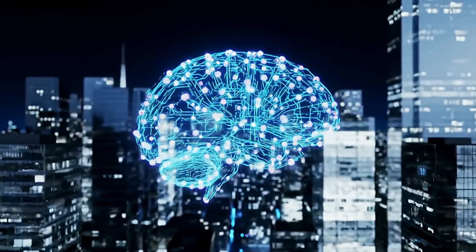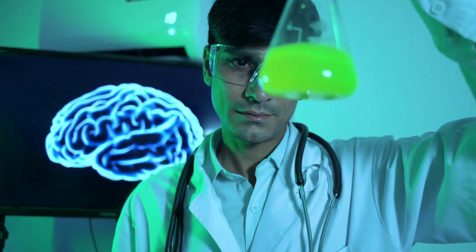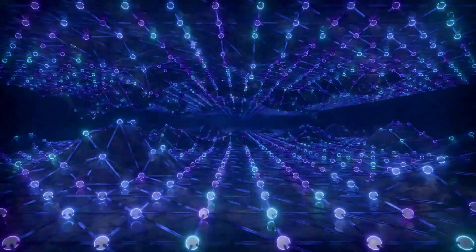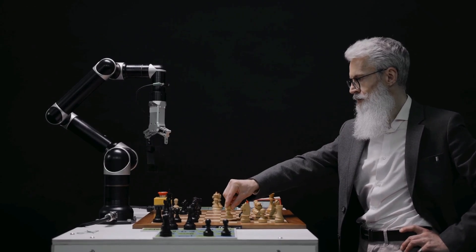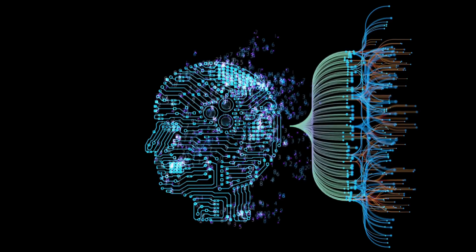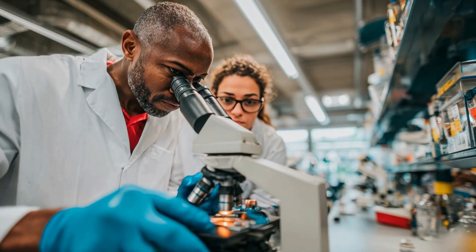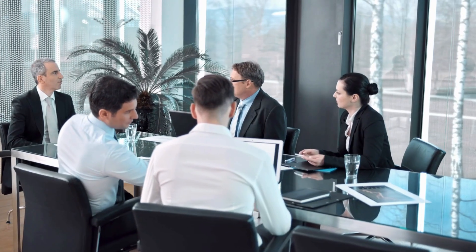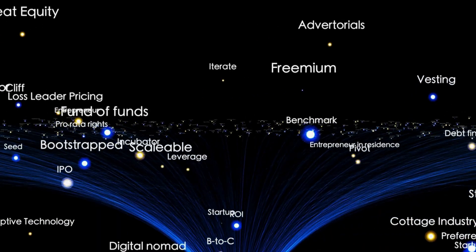Artificial general intelligence represents humanity's next evolutionary leap. Not biological evolution, but technological evolution that could surpass biological intelligence entirely. Whether AGI becomes humanity's greatest achievement or greatest threat depends on the choices we make in the next few years as these systems approach human-level capabilities. The race to AGI is happening now in research labs around the world. The companies and countries that achieve AGI first will wield unprecedented power and responsibility.